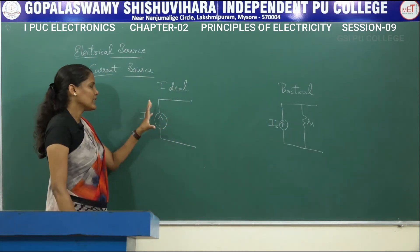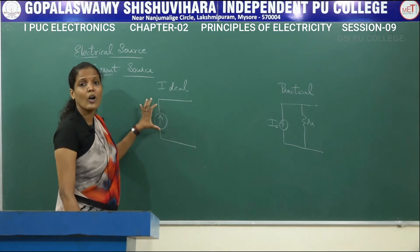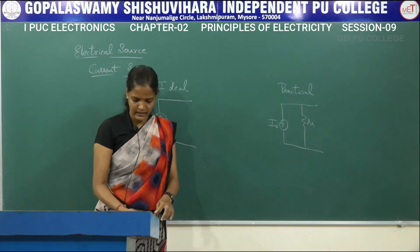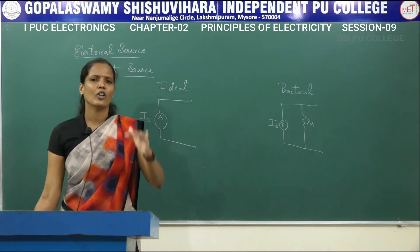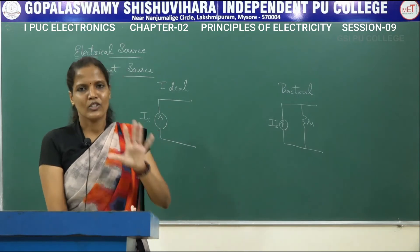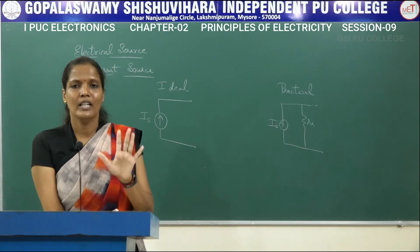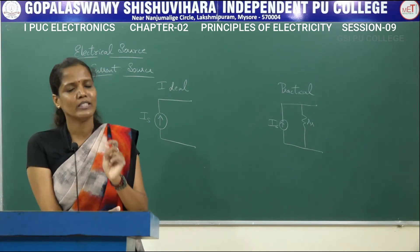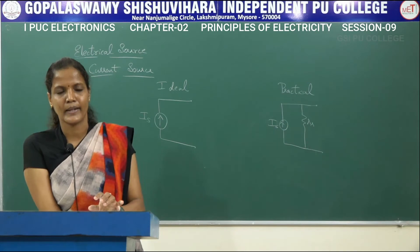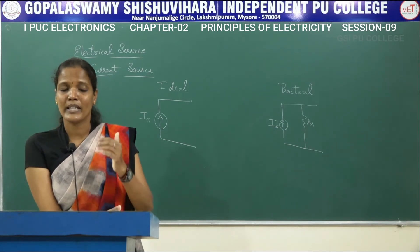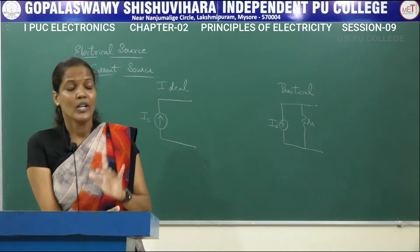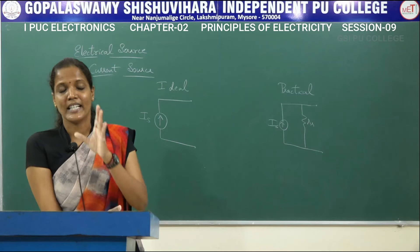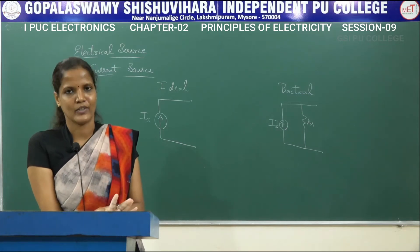Ideally, the current source will provide a constant current across the load. Whereas practically, the current source will not give a constant current across the load. That is the main difference between a practical current source and an ideal current source. The major difference between voltage source and current source: in voltage source, internal resistance is connected in series; in current source, internal resistance is connected in parallel.